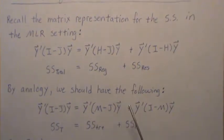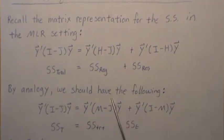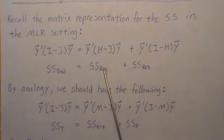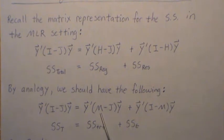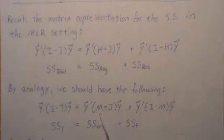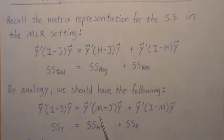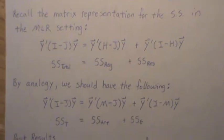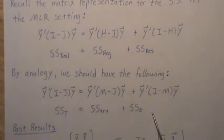By analogy you would think we'd have a similar partitioning in the design of experiments arena, but instead of using the hat matrix we use M, which is also a perpendicular projection matrix on the column space of X. In the design of experiments setting the design matrix is not full column rank, so we have to bring in the generalized inverse method. Anyway, they are similar and we're going to prove that.